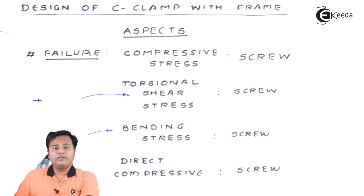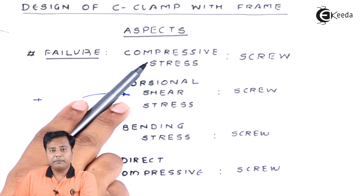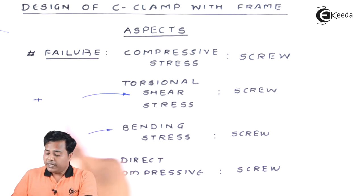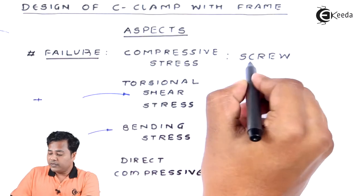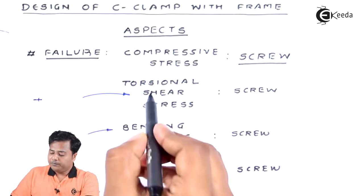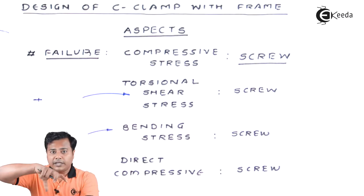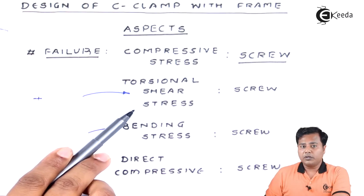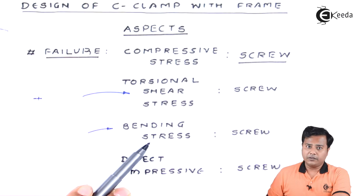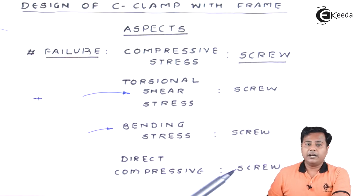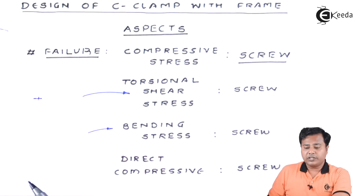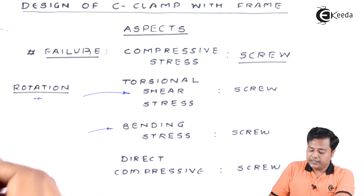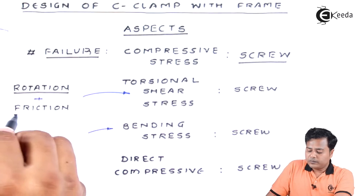There are 3 to 4 different failure methods. The very first is compressive stress — the power screw involved in this frame is going to fail under compressive stresses, so the screw will fail under compression. Again, torsional shear stress, because we are going to rotate this screw and that's why there will be torsion in the picture. Torsional shear stress is again an important factor. The next thing is bending stress, again of the screw, and next is direct compressive stress of the screw. Torsional shear stress is because of rotation as well as friction.